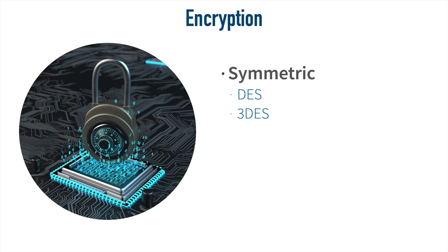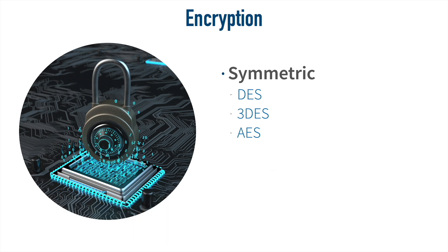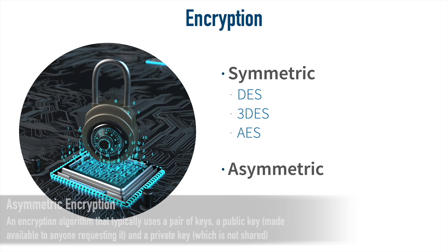Today, the flagship encryption algorithm we turn to most often is AES — the Advanced Encryption Standard. Released in 2001, it can use a variety of key lengths: 128-bit, 192-bit, or 256-bit. The more bits, the more secure the key. AES is widely used on our networks today, including wireless networks. Now let's contrast symmetric keys with asymmetric keys.